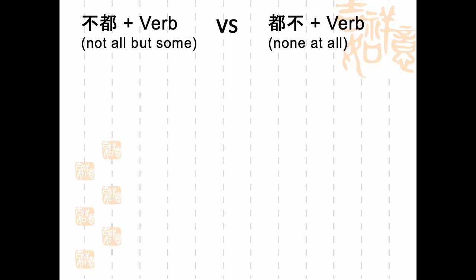Now let's look at how you would do a partial negation and a full negation using the adverb 都. On the left is a partial negation, and on the right is a complete negation. A method I like to use: if you translate them literally, it helps. The partial negation 不都 means 'not all' — literally, not all. The complete negation 都不 means 'all are not.' Hopefully that'll help you as it does with me.